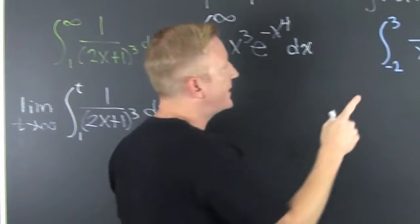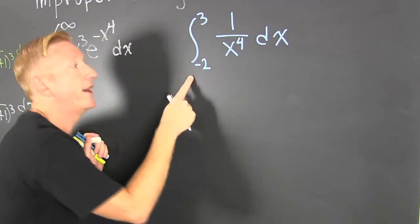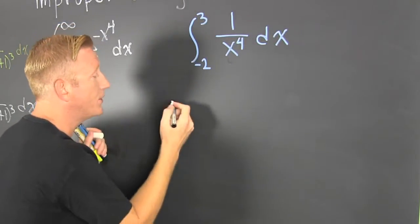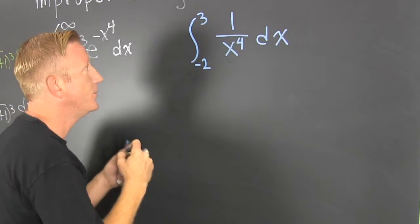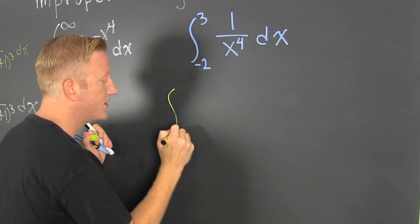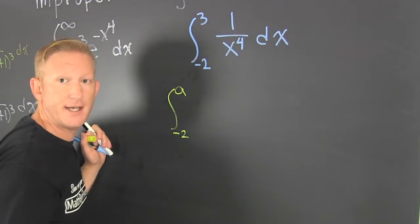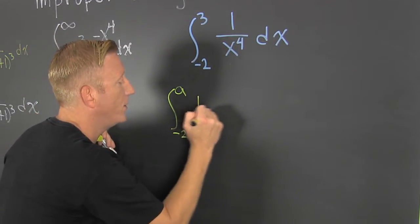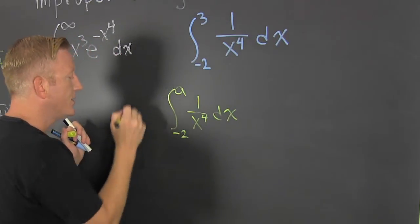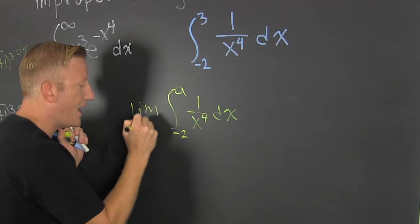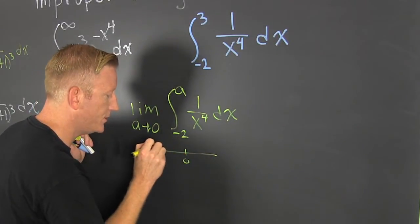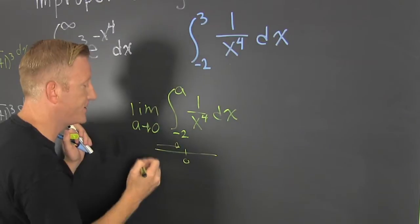These are the three types. Let's take a look at this one. Well, since I do have that point of discontinuity, I want to break this up into two cases. I want to break it up into the case where minus two goes to a. And then this will be one over x to the fourth dx. What am I going to do? I'm going to break this one over x to the fourth dx, and then I need to put the limit as a goes to zero. From which way? Well, zero, that's the left. So left.